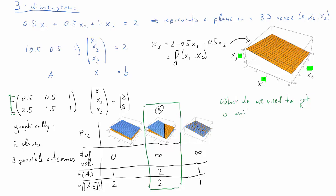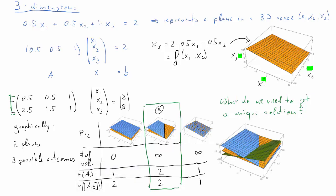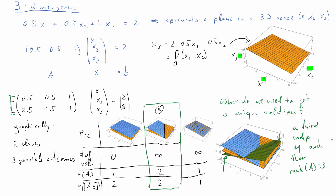You may ask: what do we actually need to get a unique solution in three-dimensional space? It turns out we need a third plane — a third independent equation. The blue, orange, and green planes intersect at one single point, giving a unique solution. Algebraically, we need a third equation that is independent of the other two. If all three are independent, the rank of the coefficient matrix A equals 3, and in a three-dimensional system that gives us a unique solution.